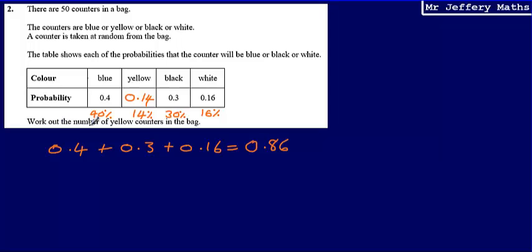Now, we're asked to work out the number of yellow counters in the bag. Well, if the probability is 14%, then that means that 14% of the counters have to be yellow. So essentially, what we are going to do is work out 14% of 50.